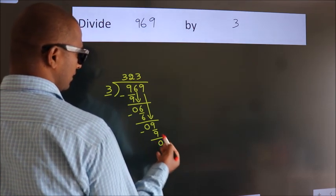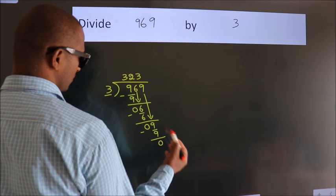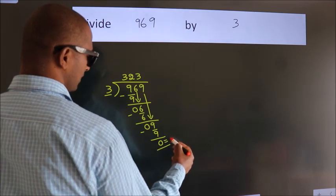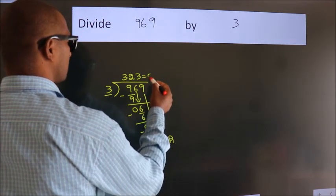After this, no more numbers to bring down, so we stop here. This is our remainder. This is our quotient.